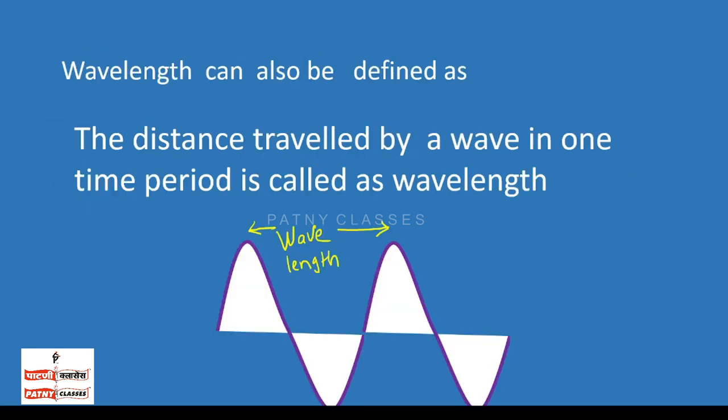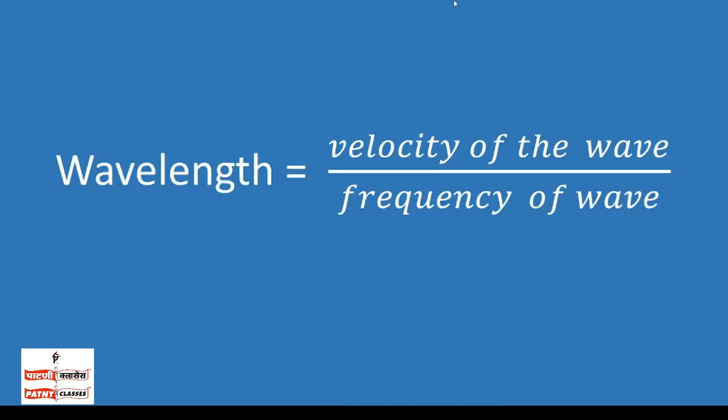Wavelength can also be defined as the distance travelled by a wave in one time period. Wavelength is given by the formula: wavelength equals velocity of the wave divided by the frequency of the wave.